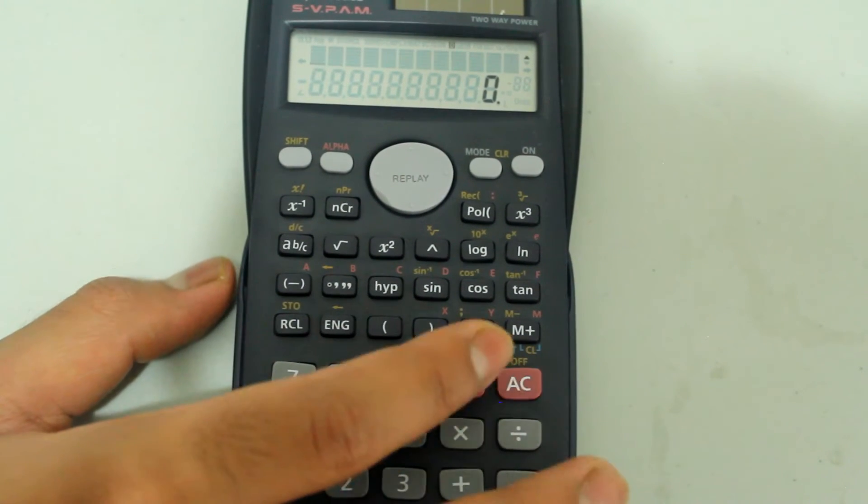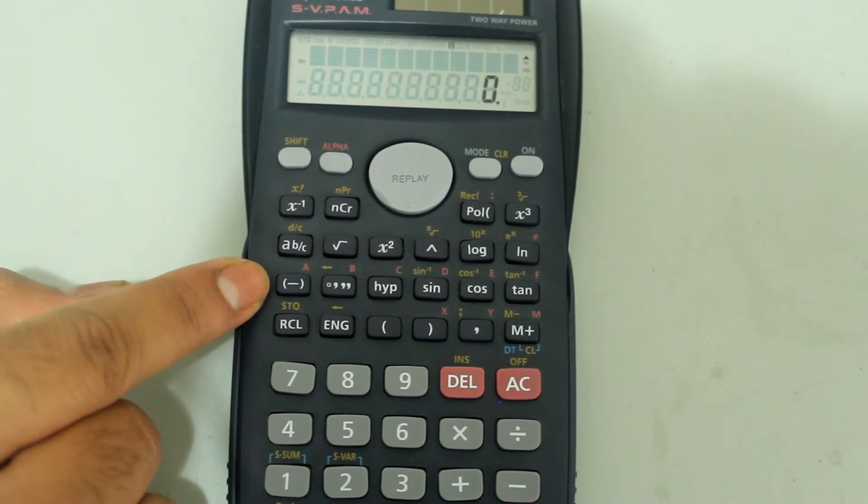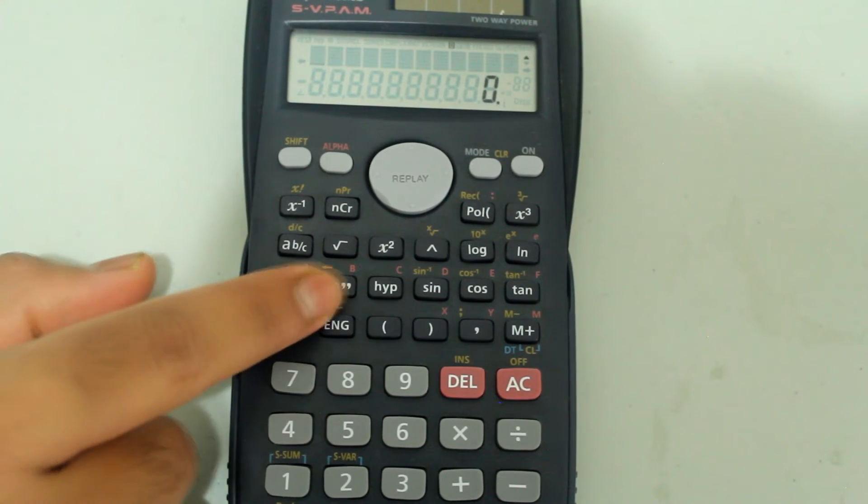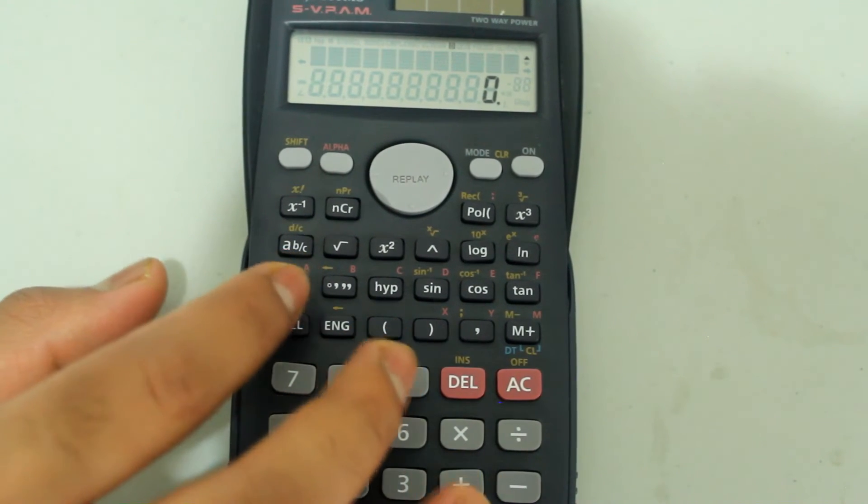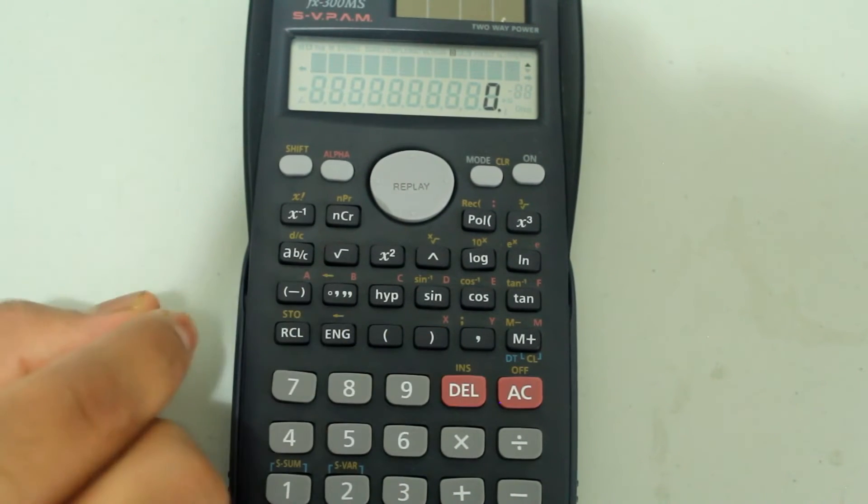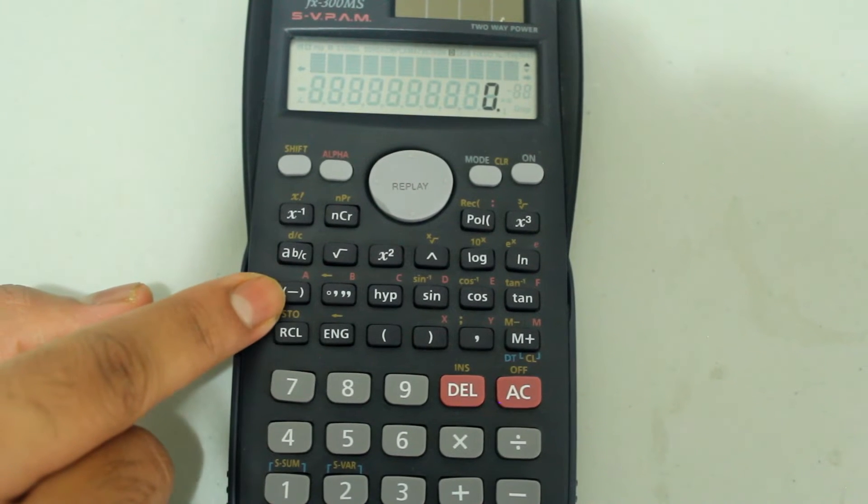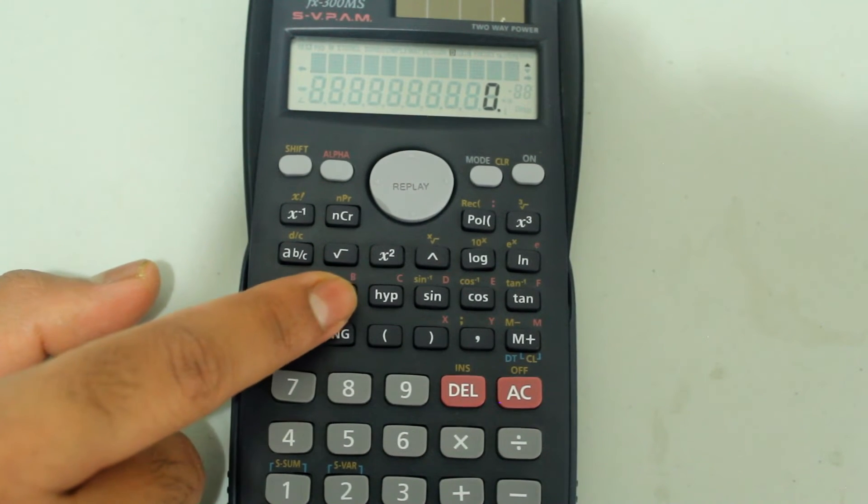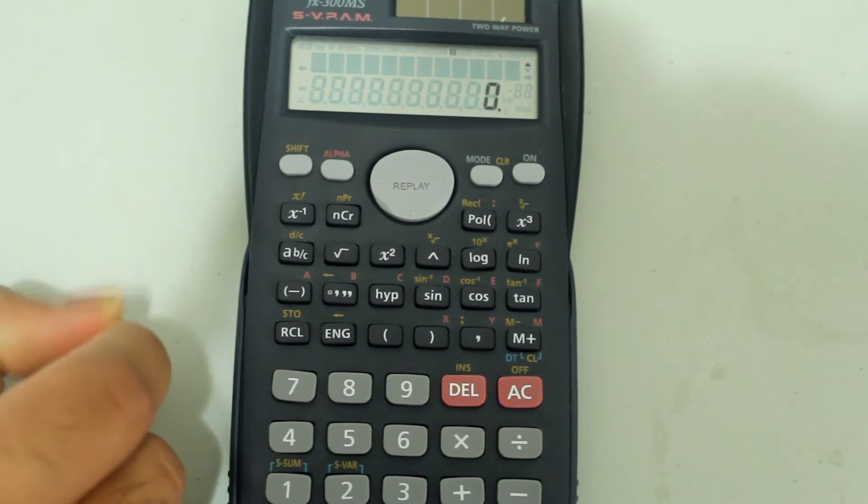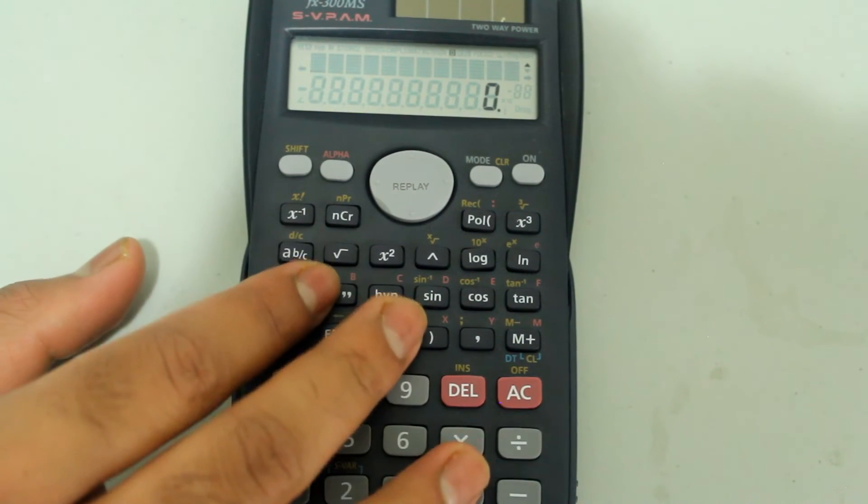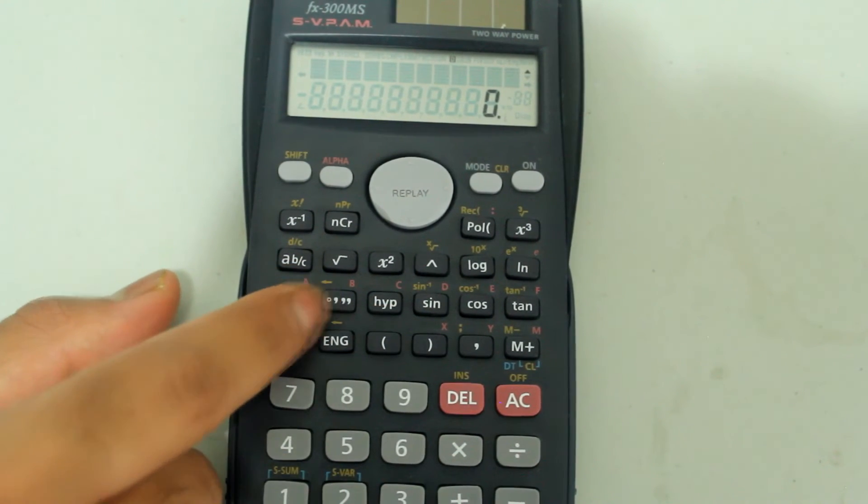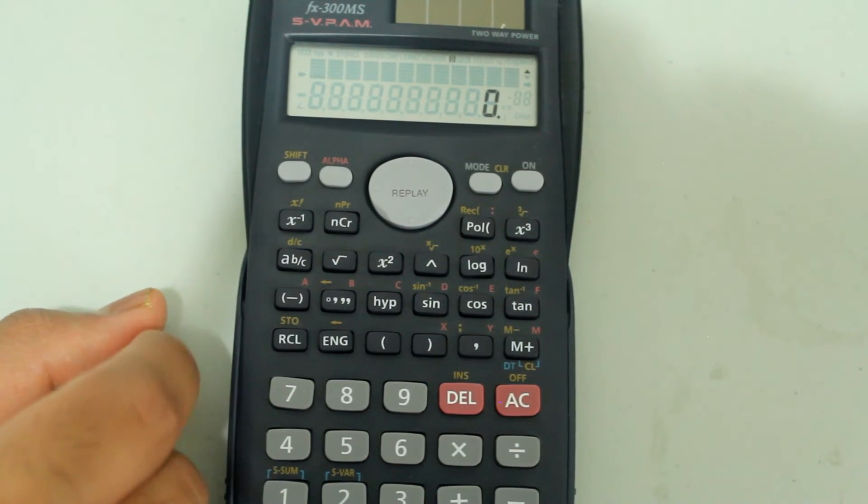You could have multiple values stored. Like you could have something set to A, something set to B and so on. So let's say 580 and A and 90 and B, you could do calculations that way too. I'm going to save 90 as the letter B and show a quick calculation.